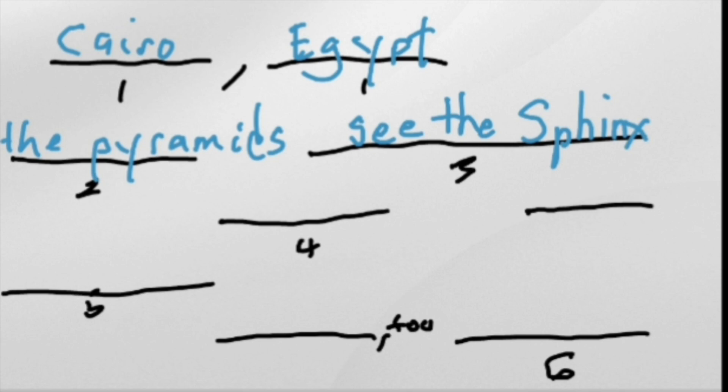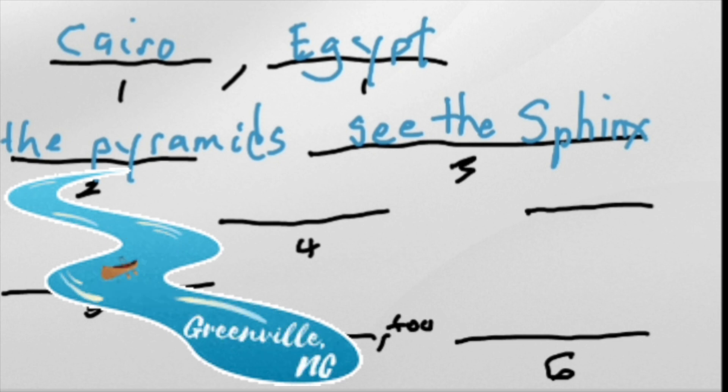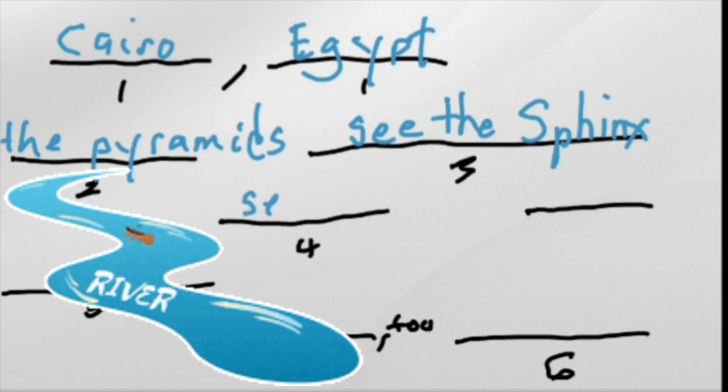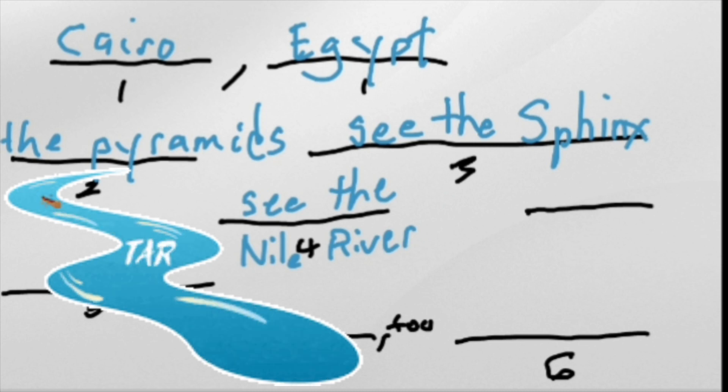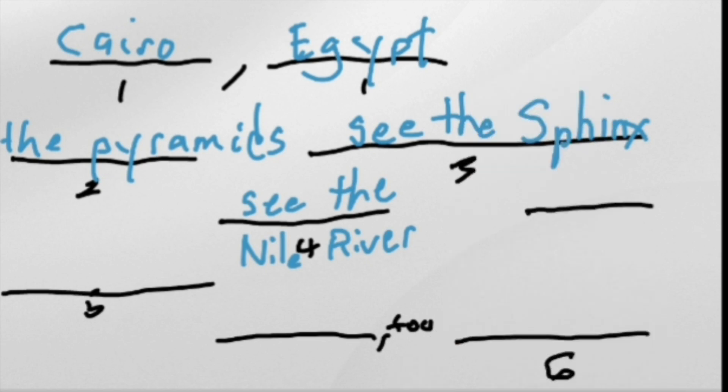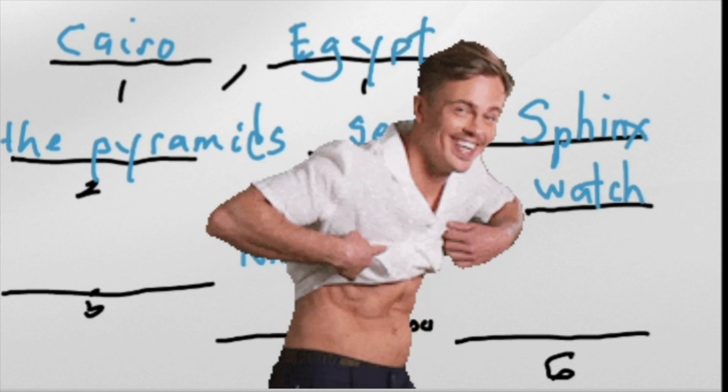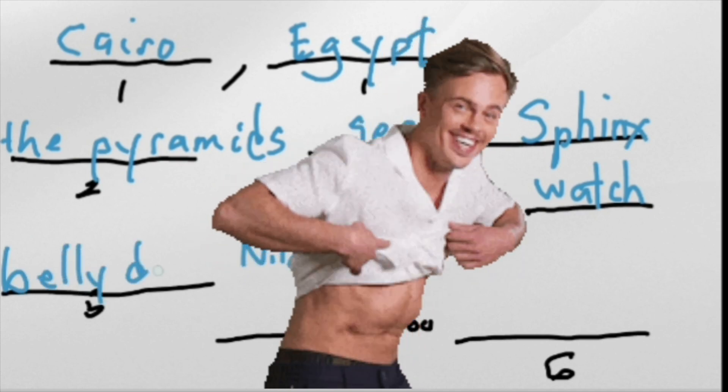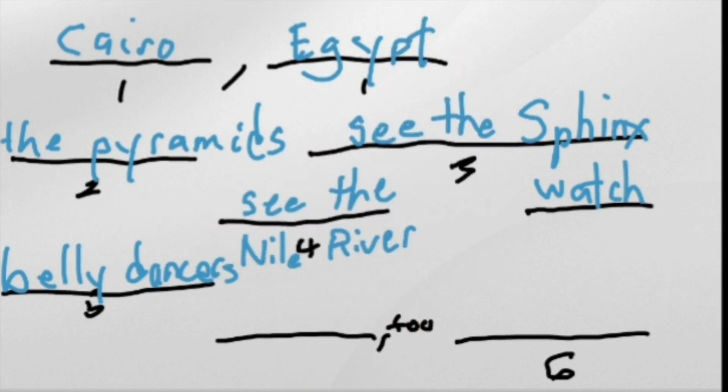Number four. Very long answer in a short space. So, please write small. See the Nile River. If you do it like this, it's okay. Or maybe you're good at writing small. Just don't write too small because I'm very old and my eyes are bad. I have grandfather eyes. Number five. Very easy. I want to watch belly dancers. There.